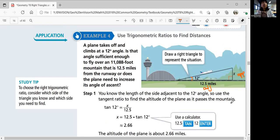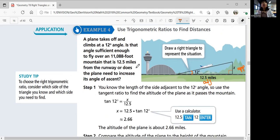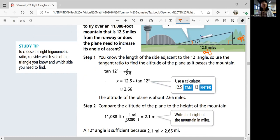So the altitude of the plane is about 2.66 miles. This is in miles. This is in miles. What's 11,088 foot in miles? You're going to convert that by using the unit rate of one mile being 5,280 feet. You're going to divide it by 5,280 feet in order to get 2.1 miles.